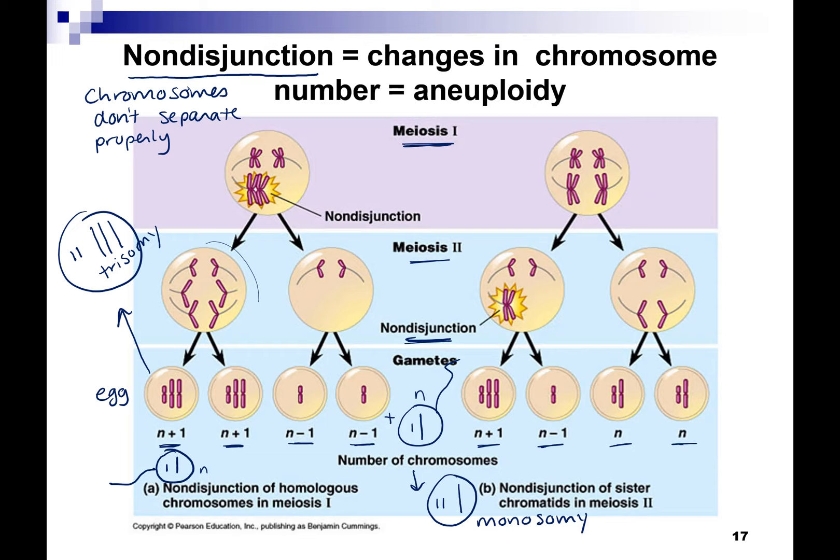When you take genetics you learn to look at all these possibilities for producing offspring. I want you to understand the concept of non-disjunction that can result in a change in chromosome number — that can result in aneuploidy. Aneuploidy is when you have a different number than the standard number of chromosomes.